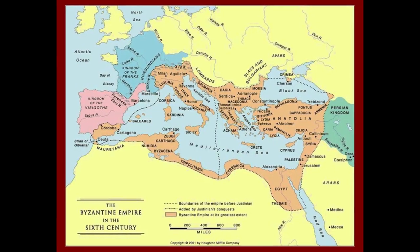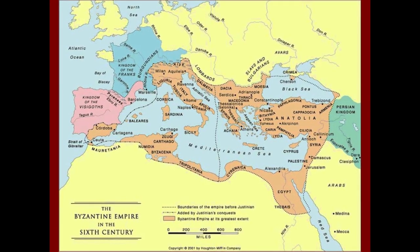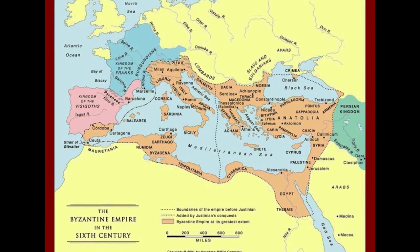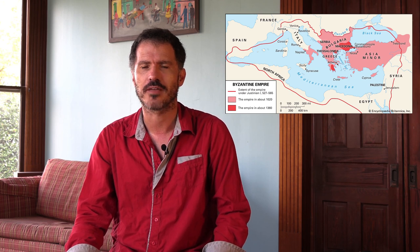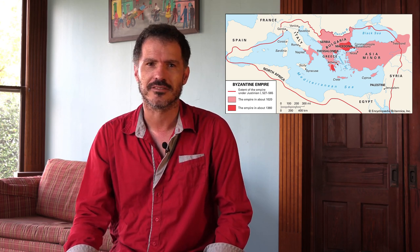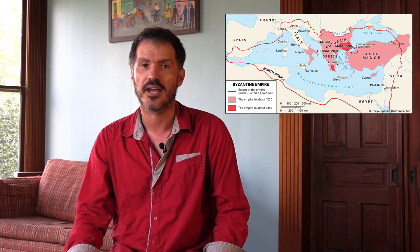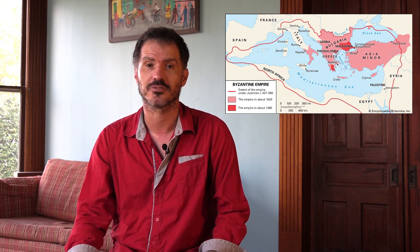These various tactics and strategies allowed the Byzantines to limp along for almost 1,000 years after Rome fell — and in some cases, to do better than limp along. In the 6th century, under the rule of Emperor Justinian the Great, the Byzantines retook Italy from the Ostrogoths, North Africa from the Vandals, and parts of Spain from the Visigoths — i.e., they almost brought back the entirety of the Roman Empire under a single rule.